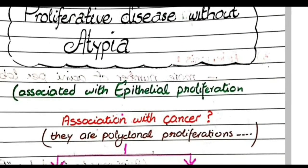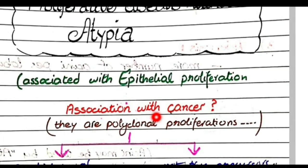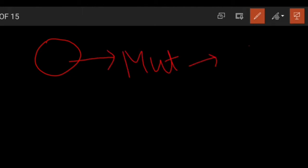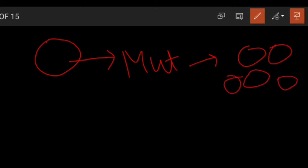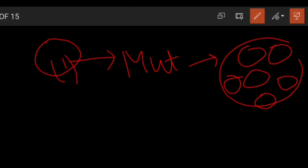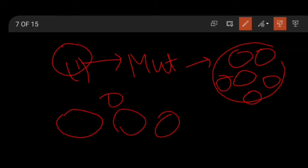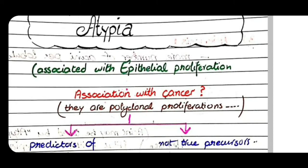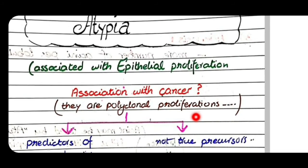In proliferative disease without atypia, the cells are polyclonal proliferations. Cancers are monoclonal — meaning a cell undergoes mutation and starts dividing rapidly, producing a clone arising from a single mutated cell. Polyclonal means the problem does not arise in a single cell; rather, multiple groups of cells have started proliferation. So in epithelial changes without atypia, the cells are polyclonal, not monoclonal, and therefore not true precursors of cancers.